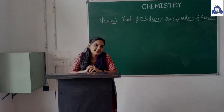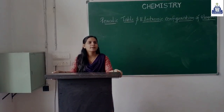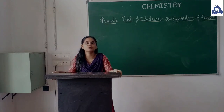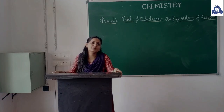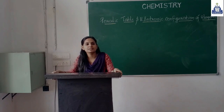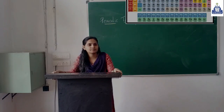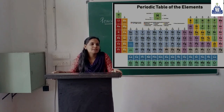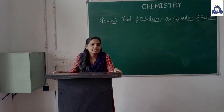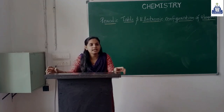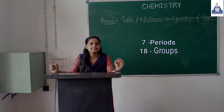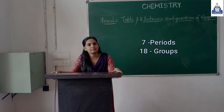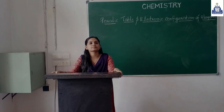Hi students, in this class we are going to learn about the periodic table and electronic configuration of elements. It's an important chapter in 10th standard chemistry. We already studied the periodic table in our previous classes. The periodic table is a tabular arrangement of elements in the increasing order of their atomic number. There are seven periods and 18 groups in the periodic table.